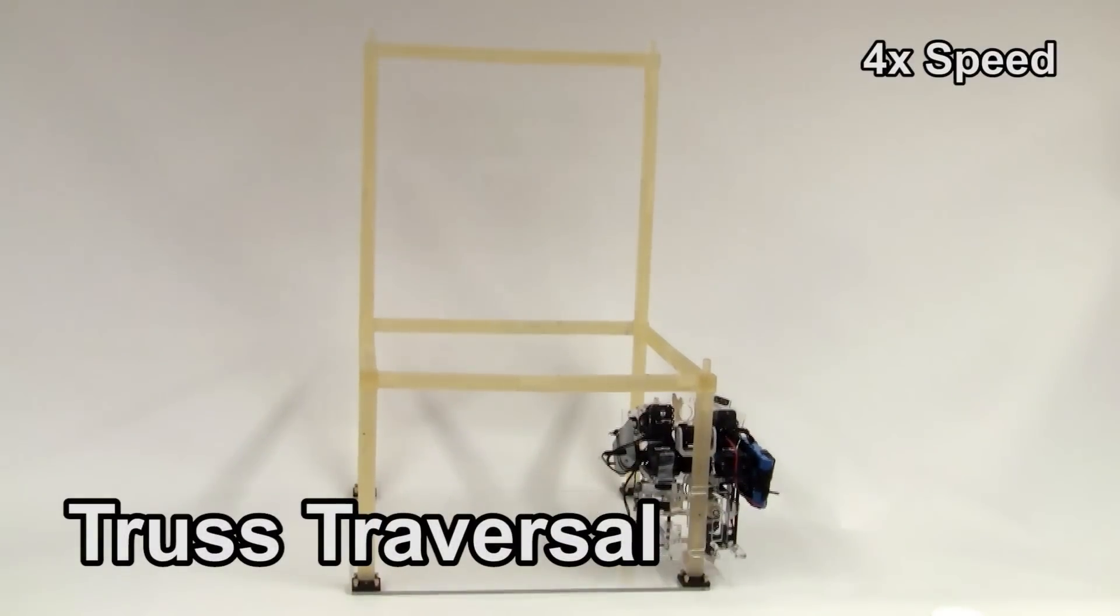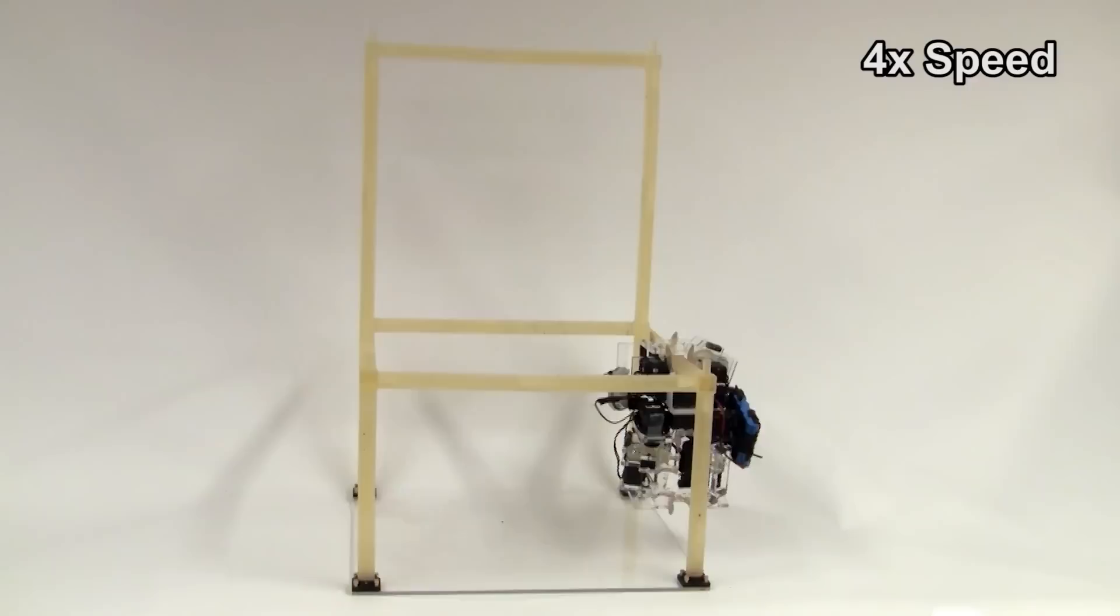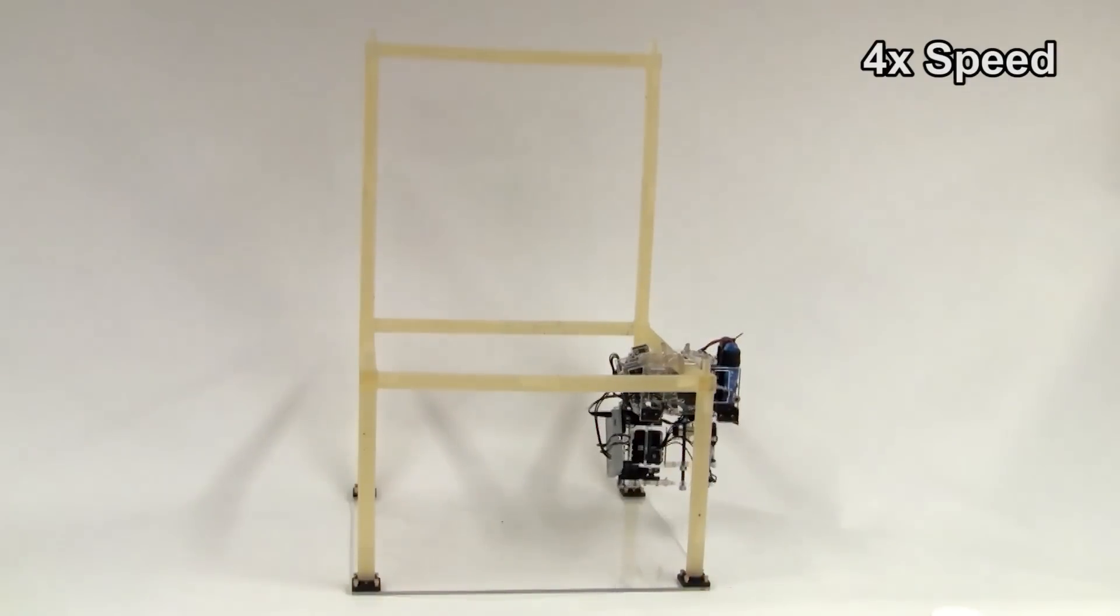Here we can see version 1 of the robot successfully traversing a chair-like structure. It uses three basic motion primitives to accomplish that.